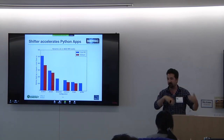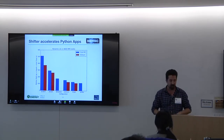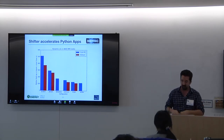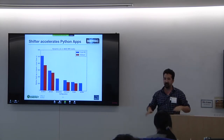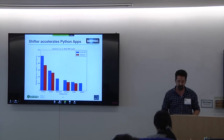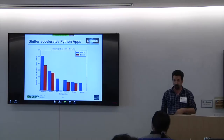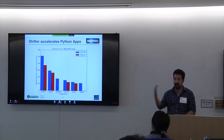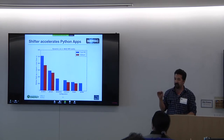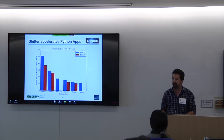It doesn't involve the network or a metadata server, so it cuts out that middleman entirely. You can make Shifter applications do the lookup even faster: when you build the container, run LD config, which will cache where all the shared object libraries are ahead of time. That can shave off maybe 10 to 15% in terms of load time.